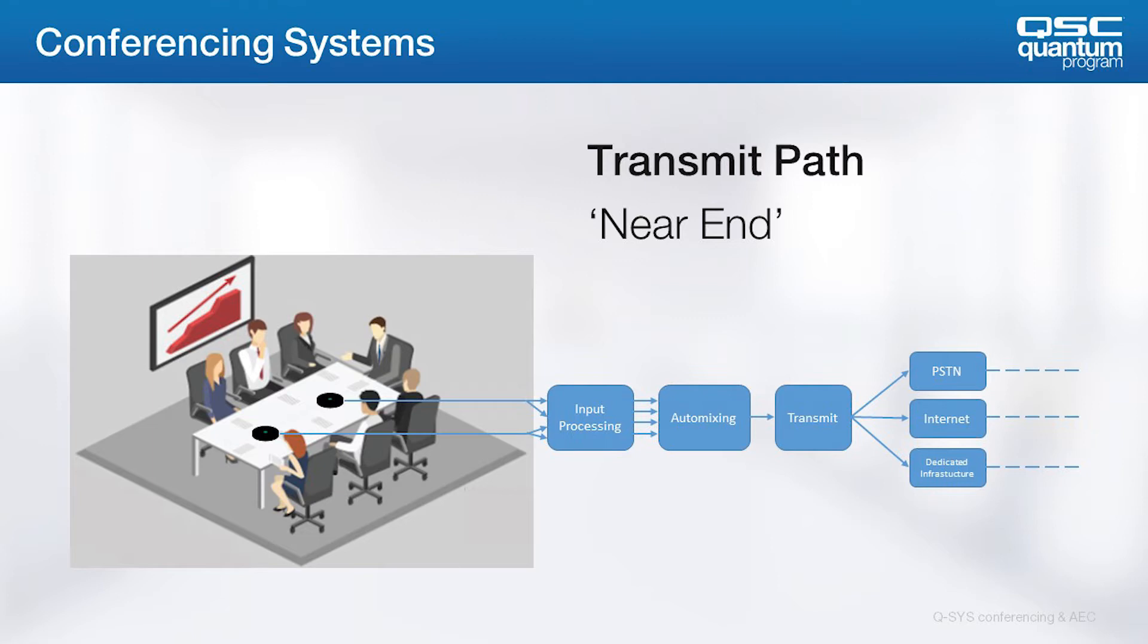The microphones will be attached to the conferencing system, which in this case would ultimately be a Q-SYS core. Conferencing microphones are typically digitally processed to optimize clarity and sound quality, then auto-mixed to send an audio signal of constant level to the receiving rooms. After the mic signals are properly processed and mixed, the transmit signals are then sent to the linking technology, which may be a dedicated video codec, a telephone line, or USB interface to a soft codec.